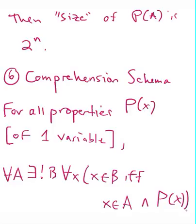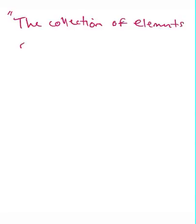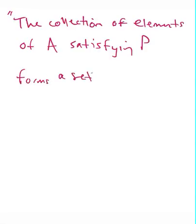So this is saying that if we have a set, if we're given a set and we have a property, then there exists the set of all elements of that set satisfying that property. So the shorthand for this, to help you remember, the collection of elements of A satisfying P forms a set.